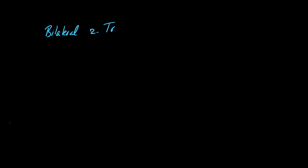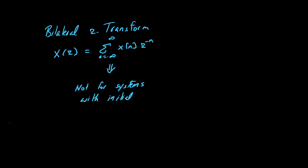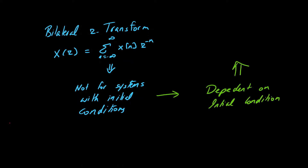Previously we have been discussing the bilateral z-transform, which is mathematically expressed as X(z) = summation from minus infinity to infinity of x[n] z^(-n). This transform is for systems which are not dependent on auxiliary conditions or initial conditions. Therefore, we move towards a system which is dependent on initial conditions, and that transformation is by means of a unilateral z-transform.